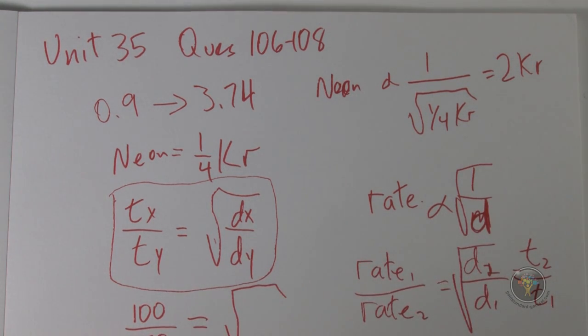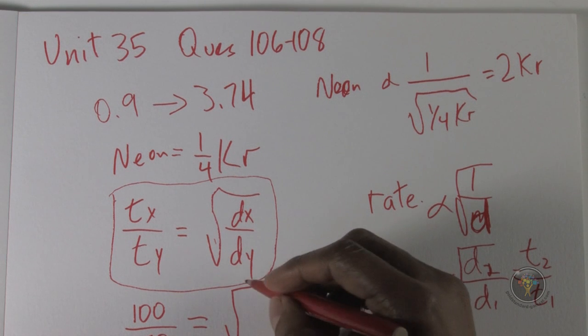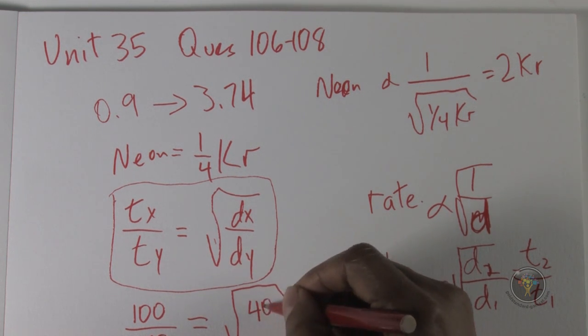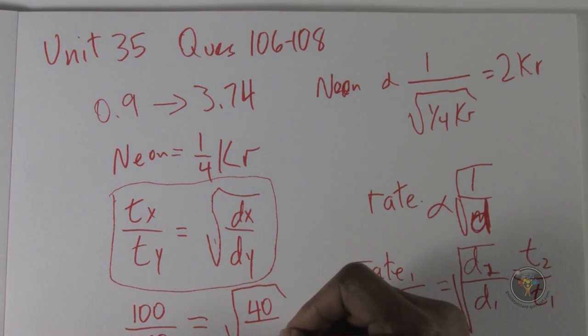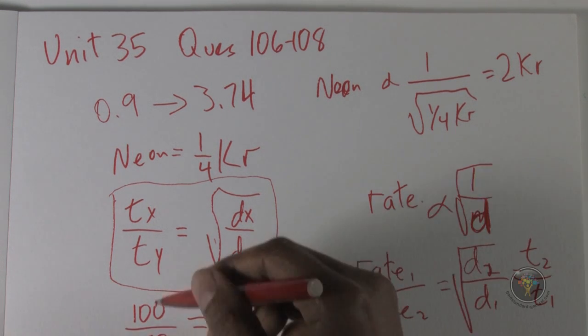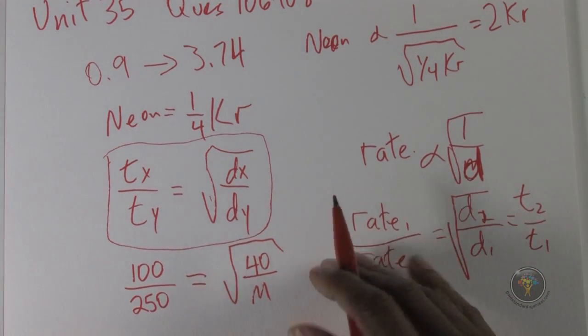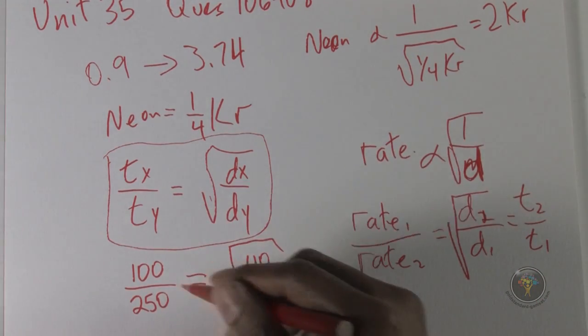And that's going to be equal to the square root of the molecular masses. So this square root, it was argon that took 100 seconds. It was argon that took 100 seconds, so this is where we put argon's molecular mass, which is 40.